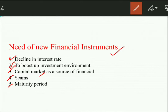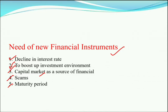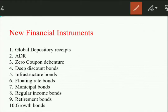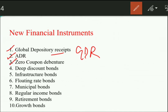With the new instruments, the maturity period is flexible so that investors can invest according to their own convenience. Here are ten innovative financial instruments: Global Depository Receipt (GDR), ADR, Zero Coupon Debenture, Deep Discount Bond, Infrastructure Bond, Floating Rate Bond, Municipal Bond, Regular Income Bond, Retirement Bond, and Growth Bond.